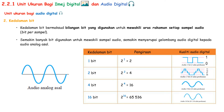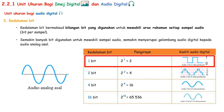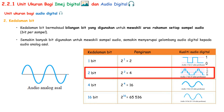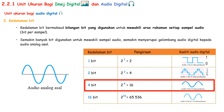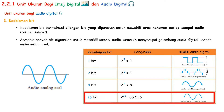You can see from the graph that the digital audio waveform for 1 bit kedalaman bit is the most unlike the original analog audio, so the quality is bad. 2 bit is better than 1 bit but still not good. 4 bit looks alike to the original waveform already. The best is 16 bit kedalaman bit, where the waveform looks smooth and similar to the original analog waveform.